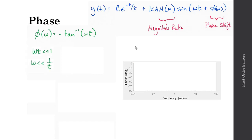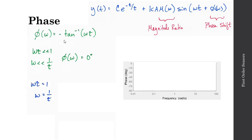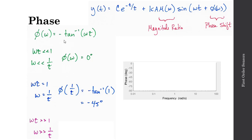The phase is defined as the negative arctan of omega times tau. Starting with omega times tau much less than 1: the arctan of something much less than 1 is approximately 0 degrees. When omega times tau equals 1, phi of 1 over tau equals the negative arctan of tau over tau, or minus arctan of 1, which gives minus 45 degrees. And for omega times tau much greater than 1, minus the arctan of a very large number gives a phi of omega equal to minus 90 degrees.